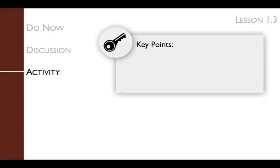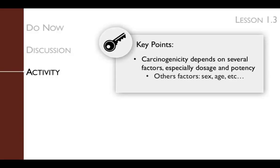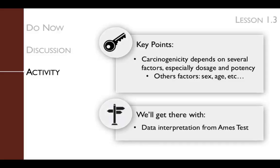The key point of this lesson's activity is to make sure that students understand that different factors influence whether a suspected carcinogen will cause cancer in humans. A key factor is dose. The Ames test may detect substances that are carcinogenic to bacteria, but that only cause cancer in humans at doses so high that humans would never be exposed to such high doses in real life. We will get there by data interpretation from the Ames test database.